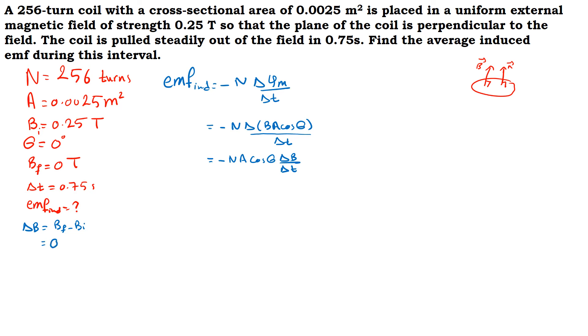Let's find delta B. It's equal to B final minus B initial, so it's equal to 0 (the final magnetic field) minus 0.25. This gives negative 0.25 Tesla.